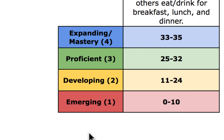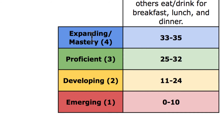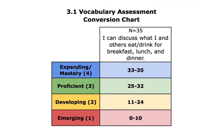I have named my four categories emerging, developing, proficient, and expanding/mastery, but you can choose whatever four names you want. During a unit, I will hang this conversion chart up in the classroom — I've actually made a large one, laminated it, and now I can write on the poster to change the learning target and to change the category ranges, depending on what assessment we're using the conversion chart for.